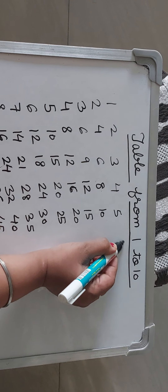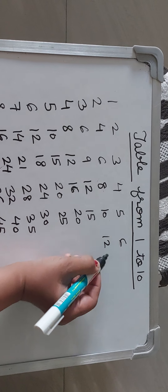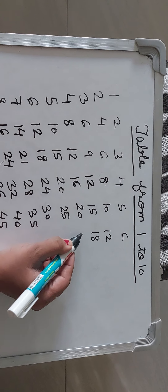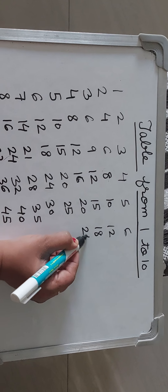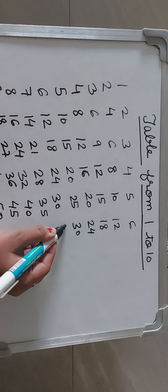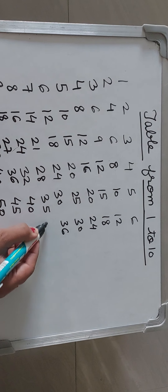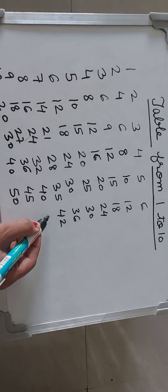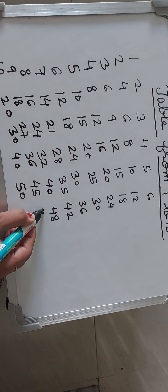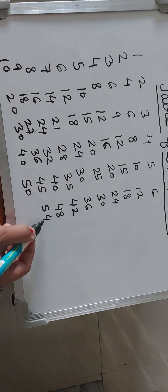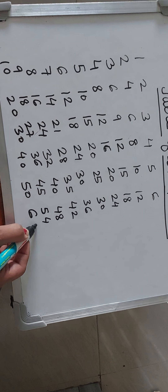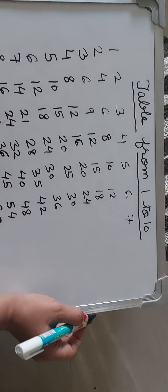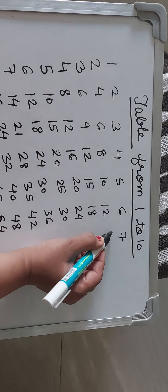Then table of 6. 6 1s are 6, 6 2s are 12, 6 3s are 18, 6 4s are 24, 6 5s are 30, 6 6s are 36, 6 7s are 42, 6 8s are 48, 6 9s are 54, and 6 10s are 60.